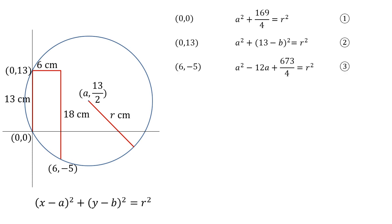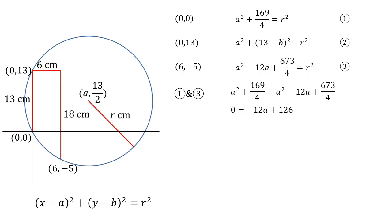Now we've got the new forms of equations 1 and 3, we can bring them together to work out a. Since both are equal to r², their left-hand sides must be equal to each other. So a² + 169/4 = a² - 12a + 673/4. Subtracting a² and 169/4 from both sides gives 0 = -12a + 126, so a = 126/12 = 21/2.